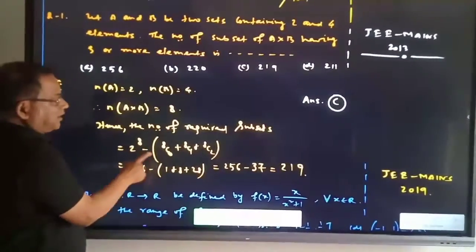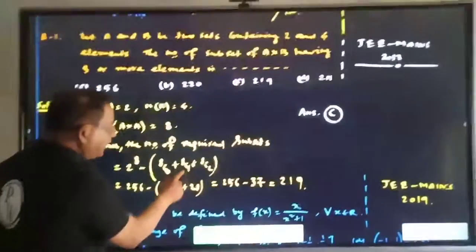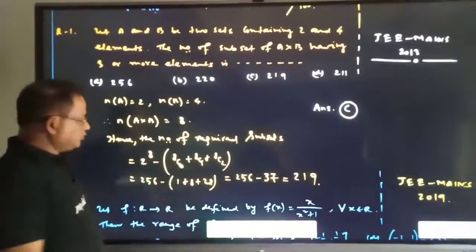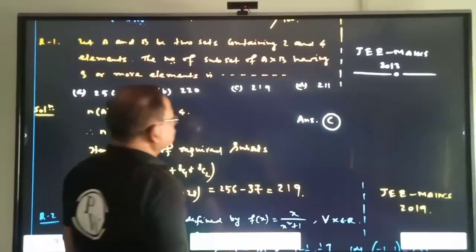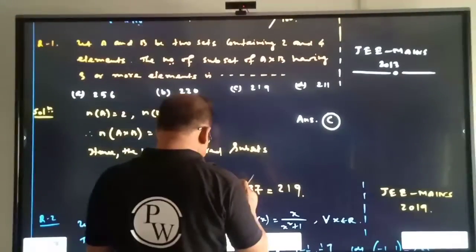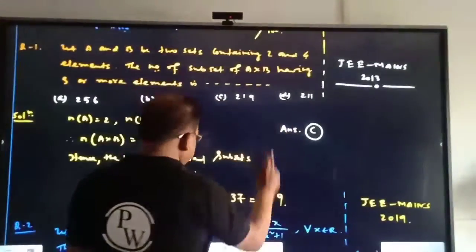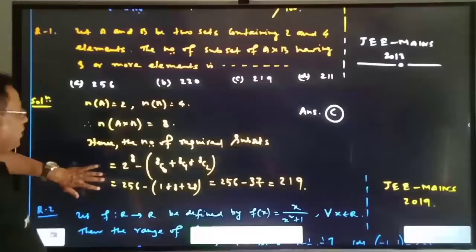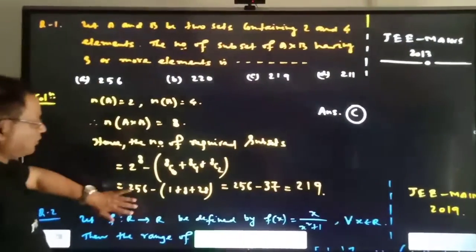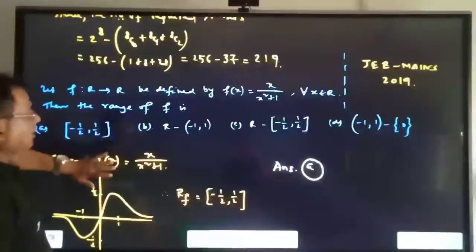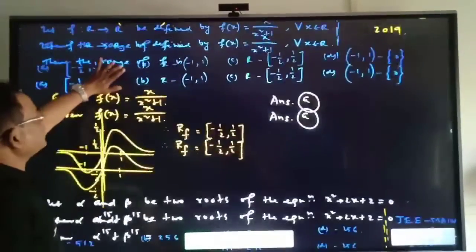We need subsets with 3 or more elements, so that's 8C3 plus 8C4 plus 8C5 plus 8C6 plus 8C7 plus 8C8. Simplified, this equals 219. By definition, option C is the right choice.